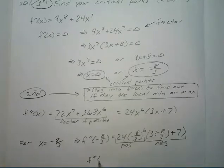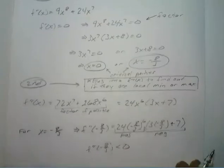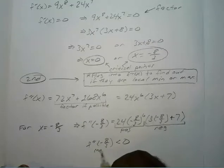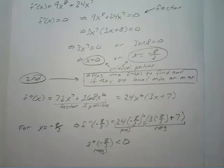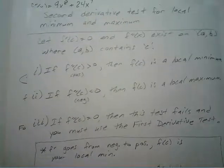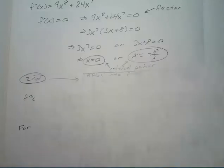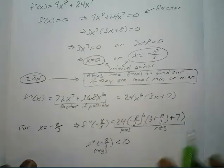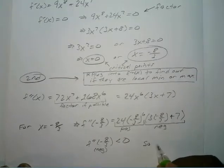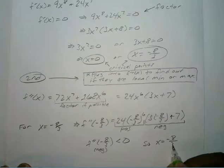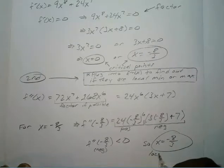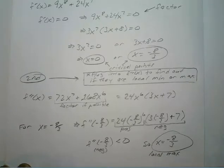So you have a positive times a negative, which gives you a negative. So the second derivative at negative 8 over 3 is less than zero, or negative. If your second derivative at point c is less than zero, that means it's a local maximum. So x equals negative 8 over 3 is a local maximum — that's your x value, or c value.